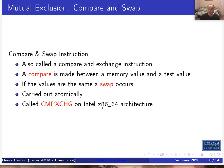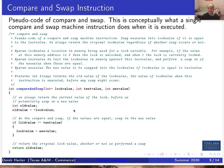Our textbook talks about two such instructions: compare and swap and the exchange instruction. Compare and swap, also called compare and exchange, basically performs a comparison between a memory value and a test value — if the values are the same, a swap occurs; if they're not the same, the swap doesn't occur. The important thing is that these are carried out atomically. On Intel x86 chips and x86 64-bit architecture, this instruction is called cmpxchg, the compare exchange machine instruction.